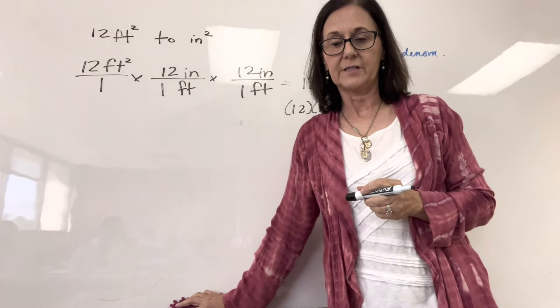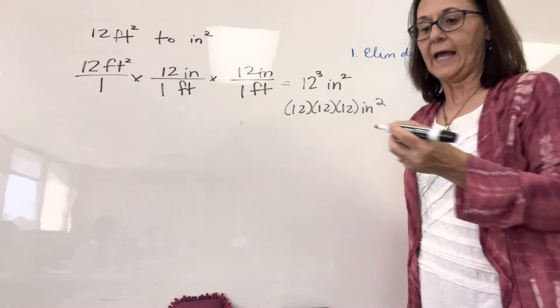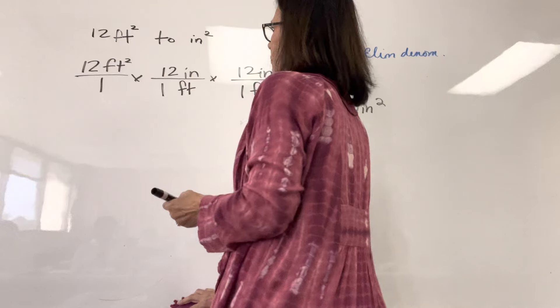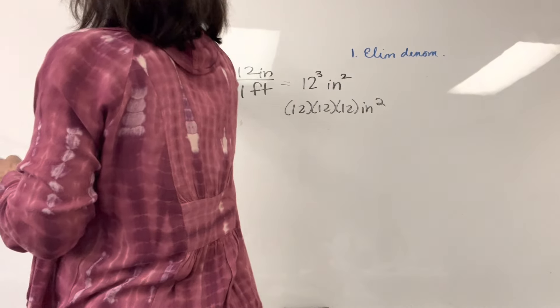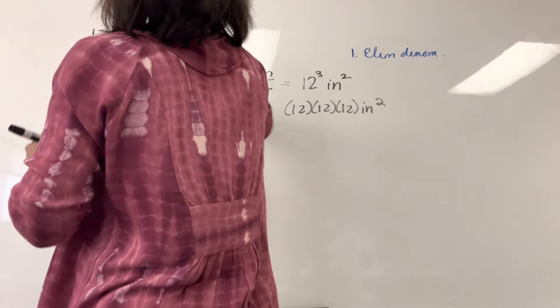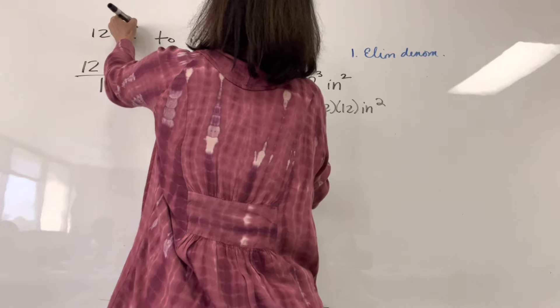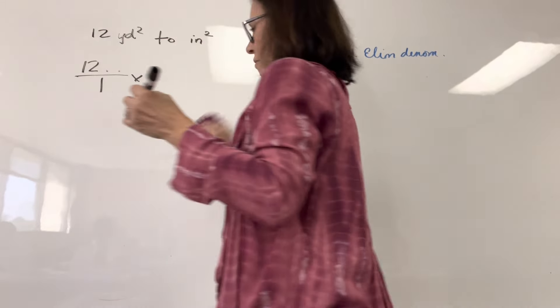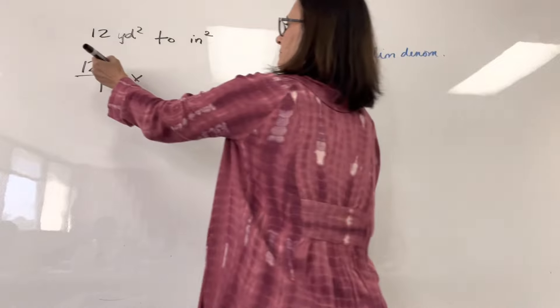All right. So we know how to get the feet to inches. How do we get from yards to inches? We have to multiply by feet because there's three feet in the yard.